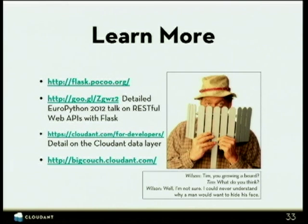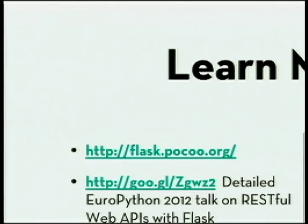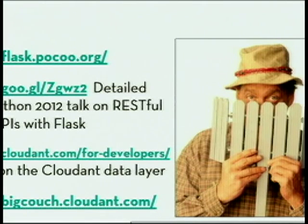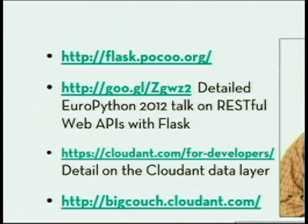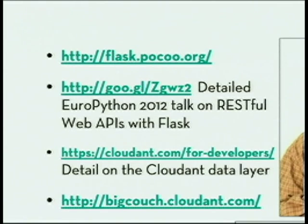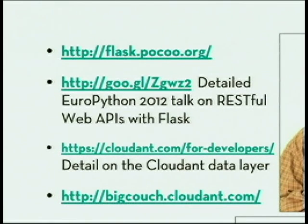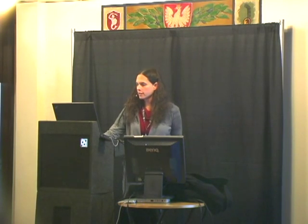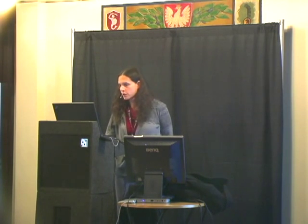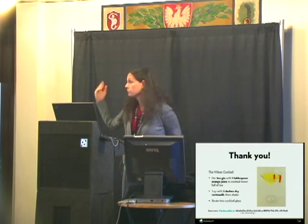So learn more. You can go to flask.pocoo.org. There's a great presentation from a .NET person about building RESTful web APIs with Flask and MongoDB. You can learn more about our layer and progress on the Wilson project from there. And you can also check out our open source BigCouch version of CouchDB, which is being merged into CouchDB in the next few months. Thank you, any questions?